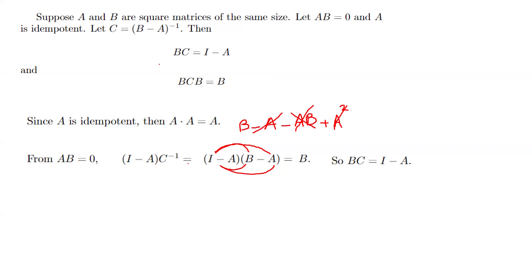So (I minus A) times the inverse of C equals B. Multiplying both sides on the right by C, we get (I minus A) times C inverse times C, which gives BC equals I minus A. We only used the invertibility of C — that is, of B minus A. We did not use any invertibility property of A or B individually.